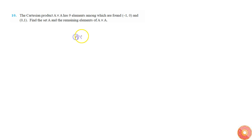Given that A cross A has 9 elements, let's say A has n elements, so that means this A also has n elements.